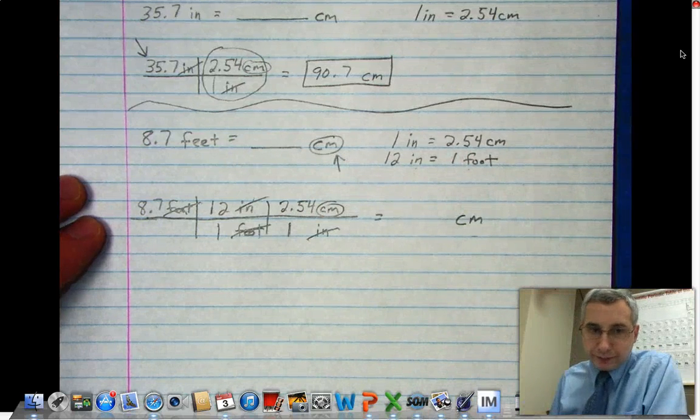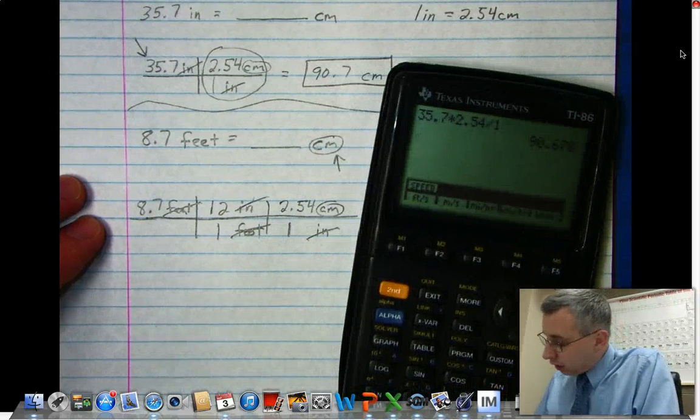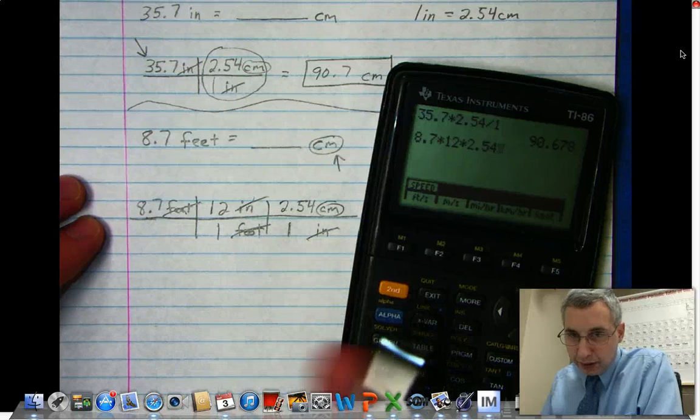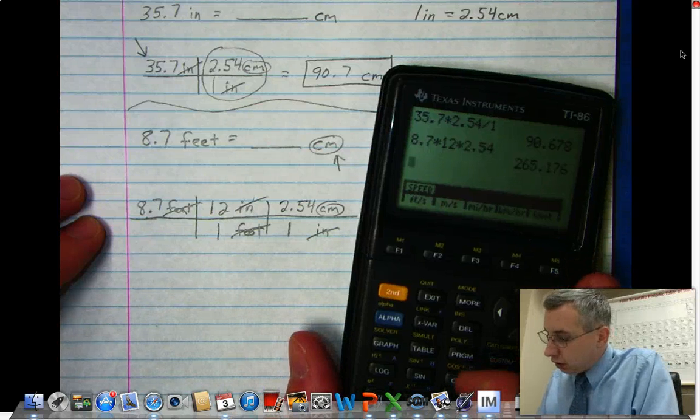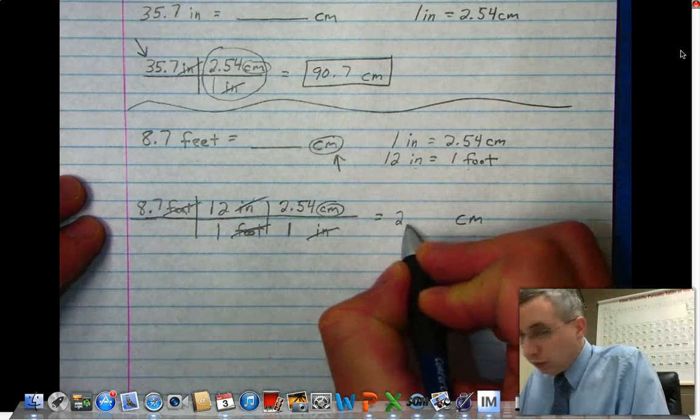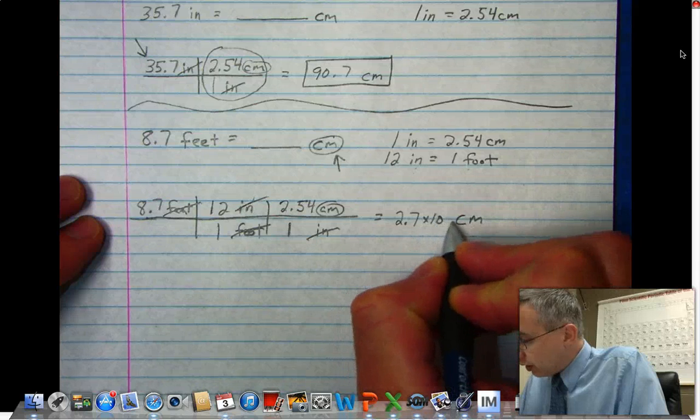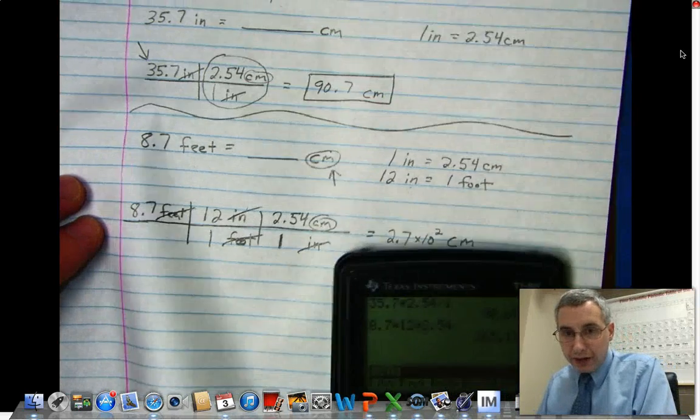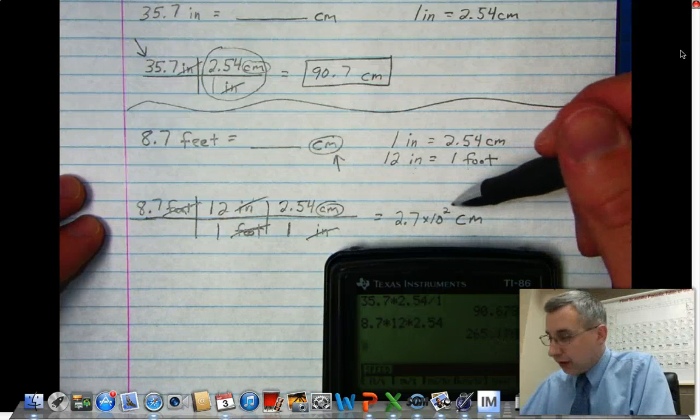Now multiply the numbers across the top: 8.7 times 12 times 2.54. I get 265.176, and in this case we should really only have two sig figs, so I'm going to write 2.7 times 10 to the second power. You might ask how did I get from having 265.176 to 2.7 times 10 to the second power?